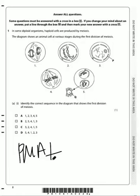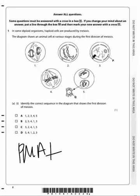We have five diagrams but only four stages, which means two diagrams show the same stage — one early, one late. The first step is the breakdown of the nuclear membrane, giving us two candidate diagrams. The earliest one will have less condensed DNA, will still have the nucleolus, and the centrioles will be closer together — all of which indicates the first step is number 3.